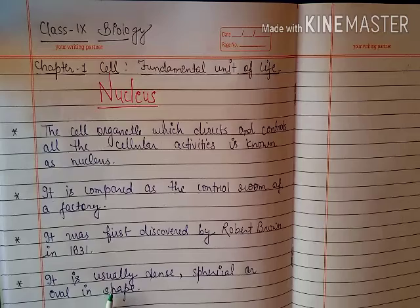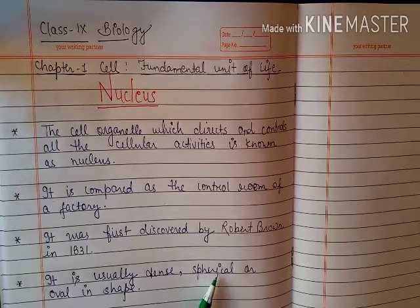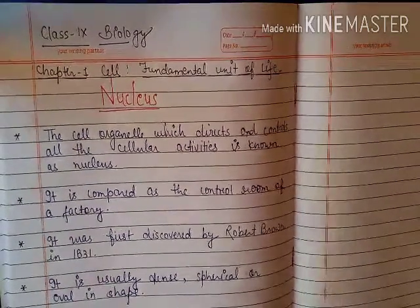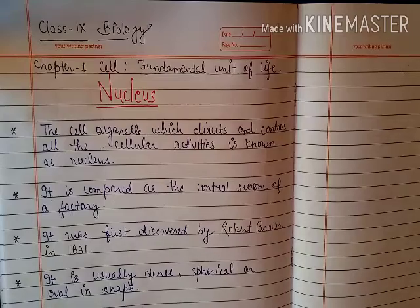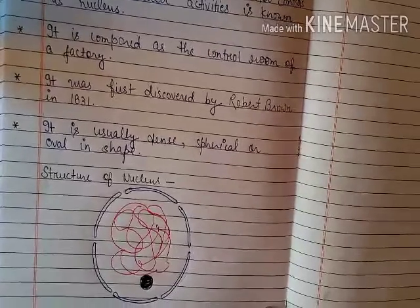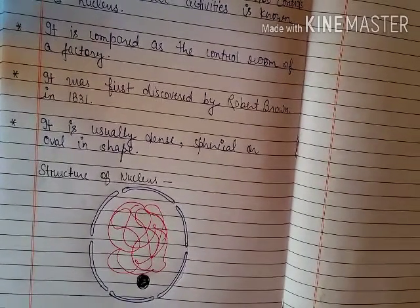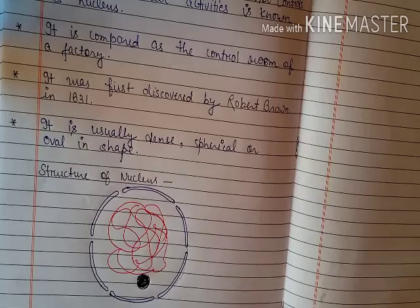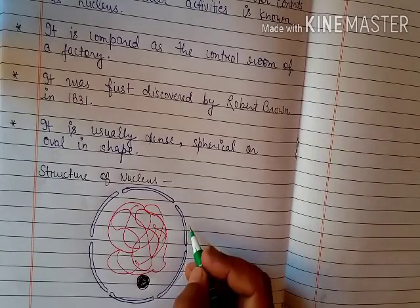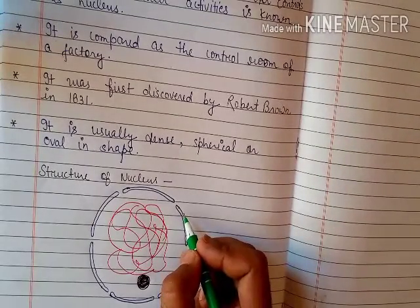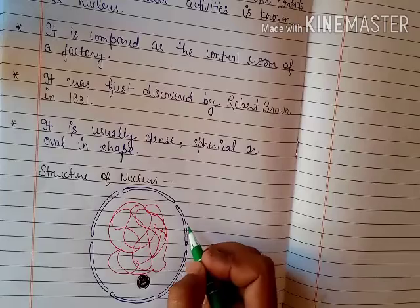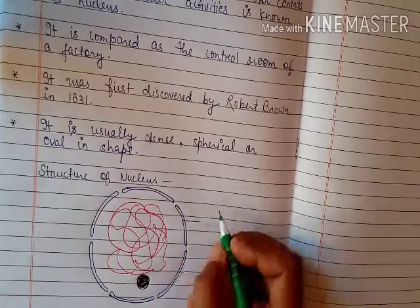The structure of the nucleus shows that it can be dense, spherical, or oval in shape. If you see the nucleus in a cell, you'll find there are four main components. The first one is the outermost covering of the nucleus, which makes the boundary of the nucleus and separates the nuclear matter from the surrounding cytoplasm - and that is called the nuclear membrane.